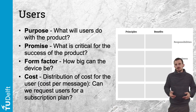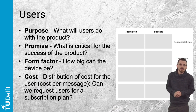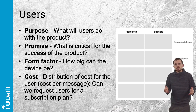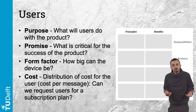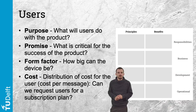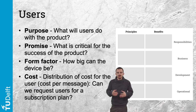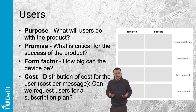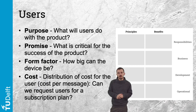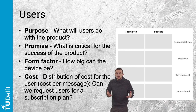What must be delivered? What is critical for the success of the product, without which there is no business or customers? On the operational level, how big should the device be, and is size an essential factor? The electronics and antenna required for some network technologies might not fit inside the casing of small products, or could influence the shape and materials.